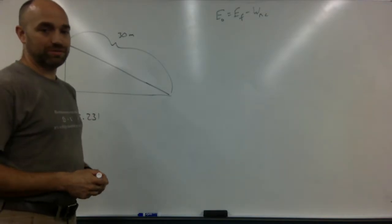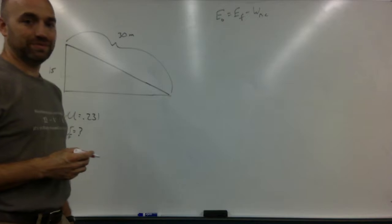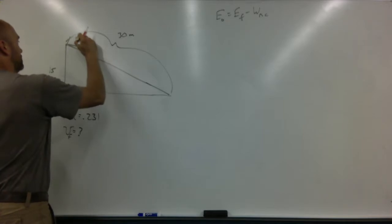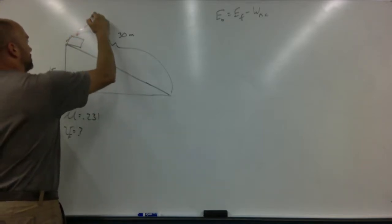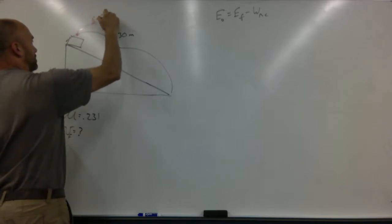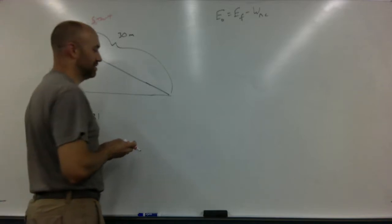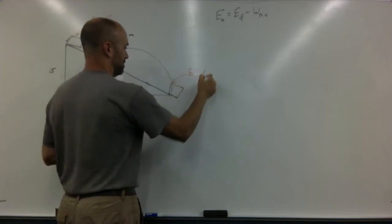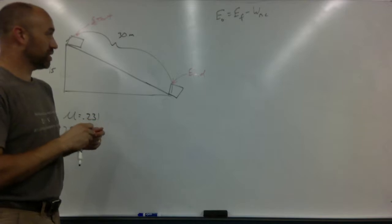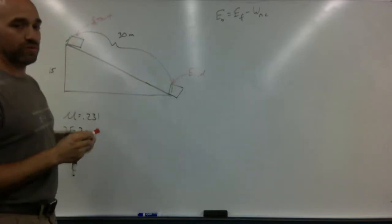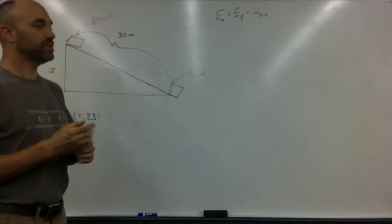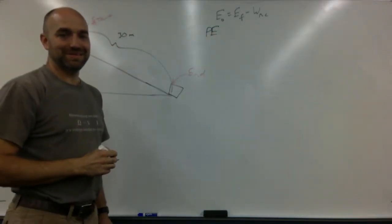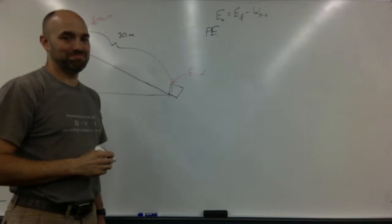Where does the box start? It starts at the top. So it starts up here — this is the start. And where does it end? At the bottom. So here's the end. In the initial situation, what kind of energies do we have? Potential energy. Anything else? It isn't moving, so that's it.